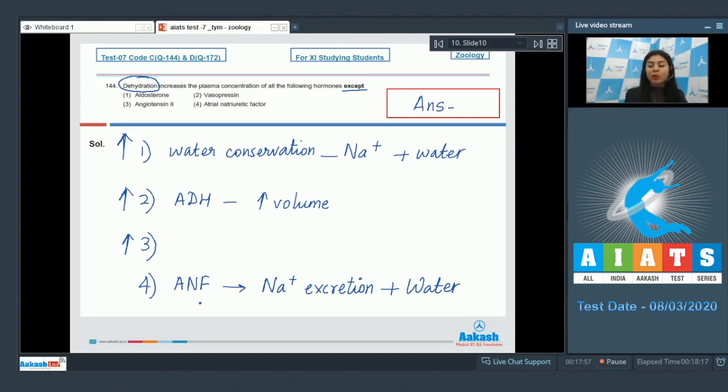Thus, ANF would promote water loss from the body, and the body will not increase its concentration when there is already less water. In the given options, aldosterone, vasopressin, and angiotensin 2 all would conserve water, whereas ANF would promote water loss and would not increase in dehydration. The correct answer is option number 4.